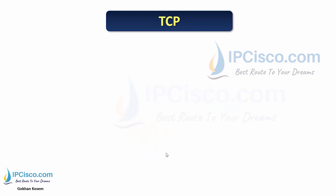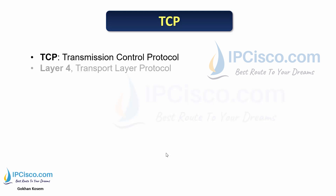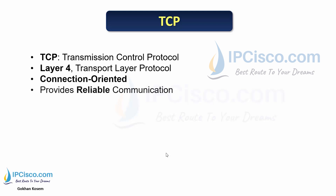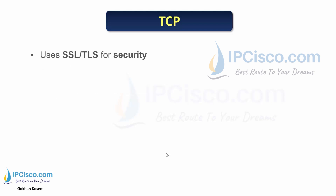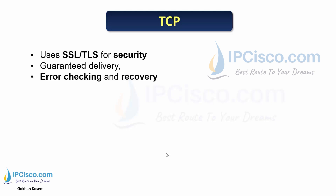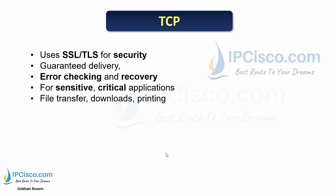What about TCP? TCP — Transmission Control Protocol — is a layer 4 protocol. It is a connection-oriented protocol. For TCP transmission, a TCP connection must first be established. TCP provides reliable communication and guarantees data delivery with different mechanisms, but it is slower than UDP. For security, TCP uses SSL/TLS. For error checking, it has a more complex mechanism than UDP and also provides error recovery. We use TCP for sensitive and critical traffic such as file transfers, downloads, and printing.